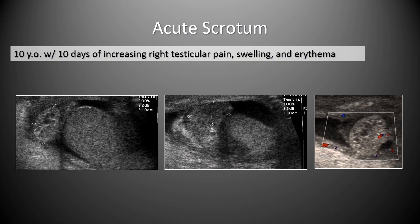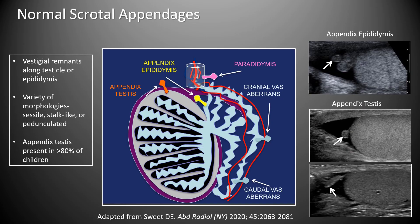A 10-year-old with 10 days of increasing scrotal pain, swelling, and erythema showed an echogenic mass above the level of the testicle associated with the epididymal head with no color signal. There are a number of normal scrotal appendages — vestigial remnants with sessile, stalk-like, or pedunculated morphologies. The appendix testis is present in over 80% of children; appendix epididymis, paraepididymis, and vas aberrans also exist.